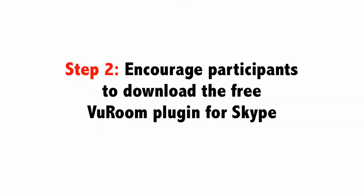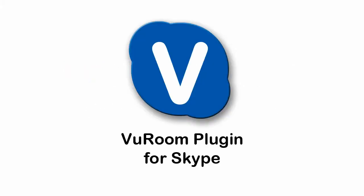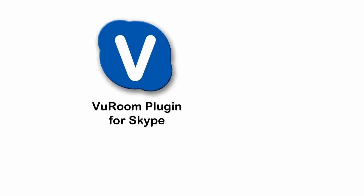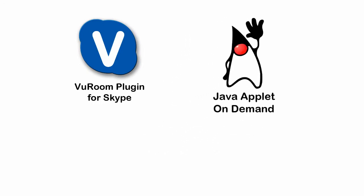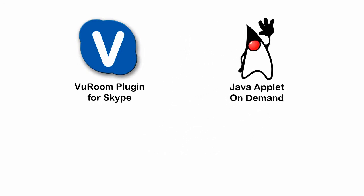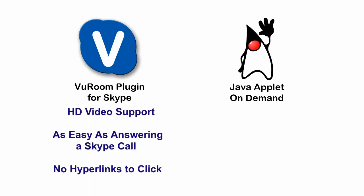Step 2: Encourage your meeting attendees to download the free ViewRoom plugin for Skype prior to the meeting. ViewRoom supports meetings using the installable ViewRoom plugin for Skype or a Java applet that loads when participants click the hyperlink that appears in their Skype chat windows when you invite them to a ViewRoom video conference. Installing the free ViewRoom plugin provides the best support for high-definition video and makes it quicker and easier for participants to join your ViewRoom meetings.